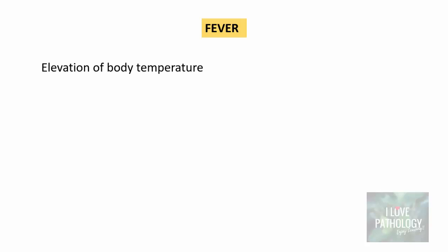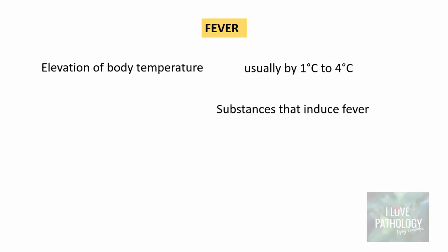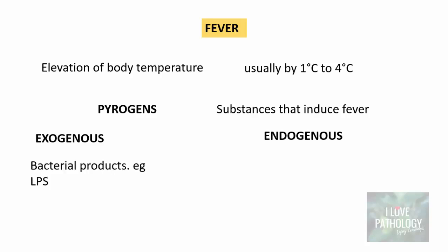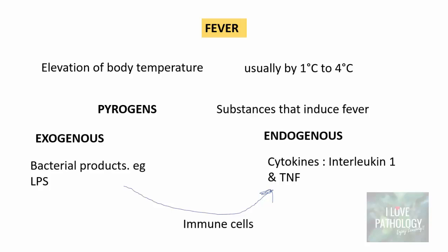Fever is elevation of body temperature, usually by 1 to 4 degrees Celsius. The substances that induce fever are referred to as pyrogens. These pyrogens can be exogenous or endogenous. Exogenous pyrogens are basically bacterial products such as lipopolysaccharide, and these bacterial products, through immune cells, help in the release of endogenous pyrogens which are cytokines — basically interleukin-1 and tumor necrosis factor. These cytokines upregulate cyclooxygenase activity and produce prostaglandins.